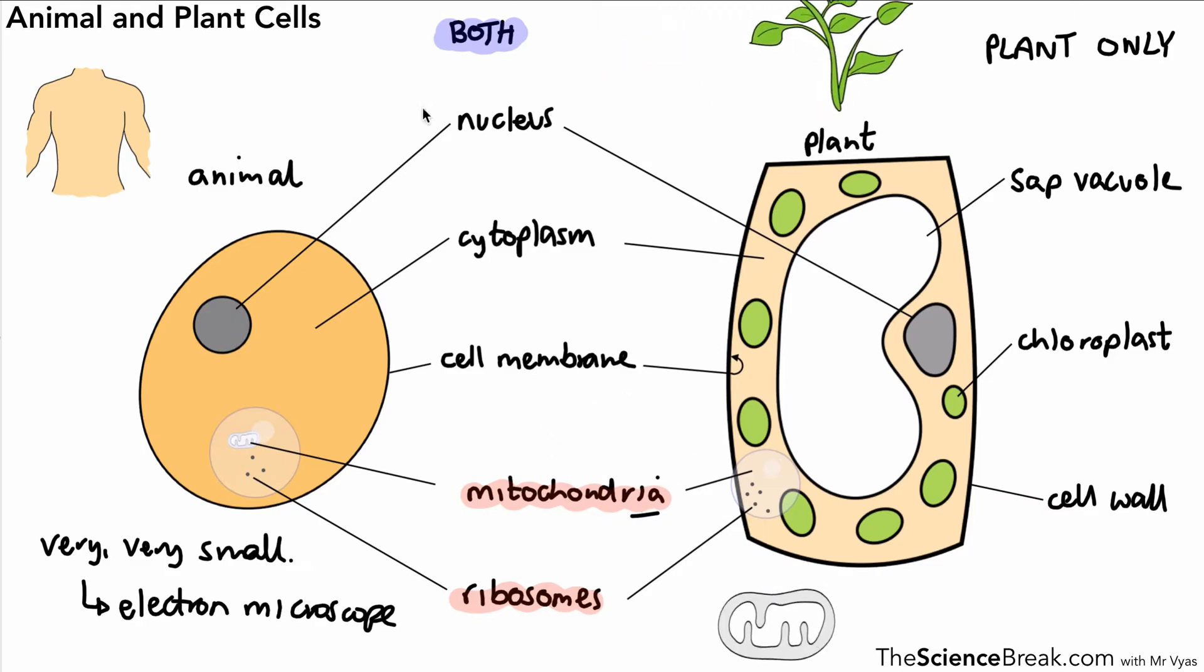Let's start with the nucleus. The nucleus has the job of controlling what goes on inside the cell, and it does that through something it has inside called DNA.